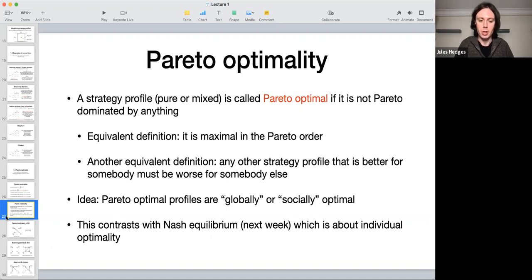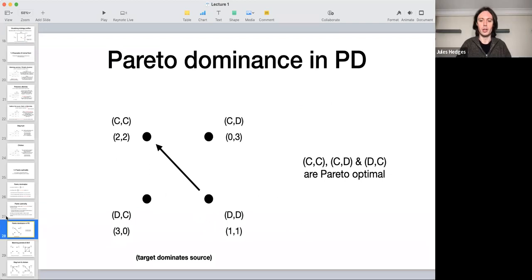Now I'm just going to go through some examples of this to see what it looks like. So here's Prisoner's Dilemma. So here are the four strategy profiles of Prisoner's Dilemma, and I've written the payoffs for the two players next to it. So here, this arrow means that the profile CC cooperate cooperate Pareto dominates defect defect because you can see, well, in fact, it is better for both players. It would be enough that it's better for at least one player.